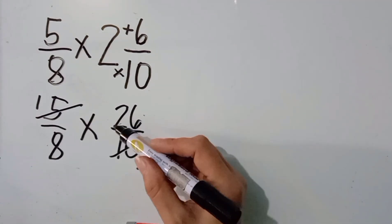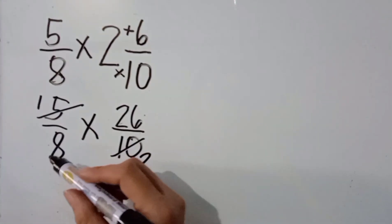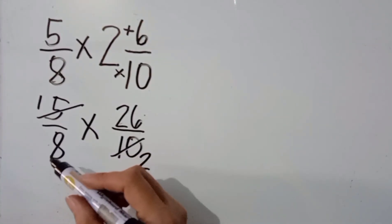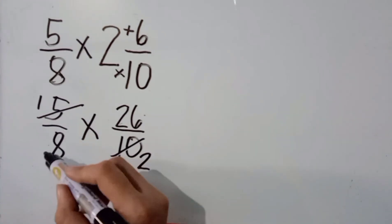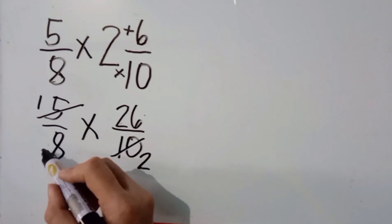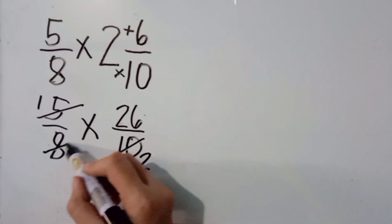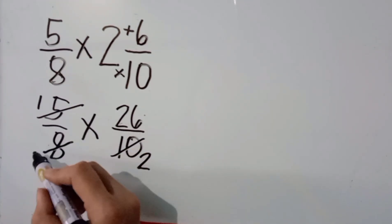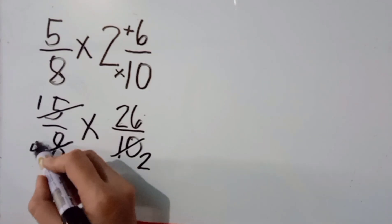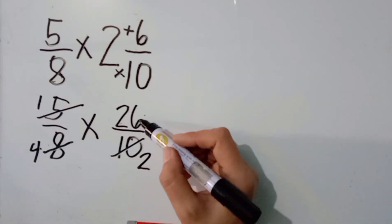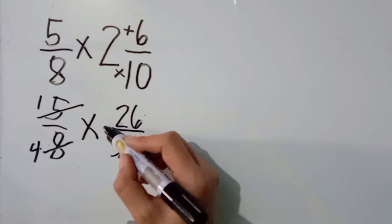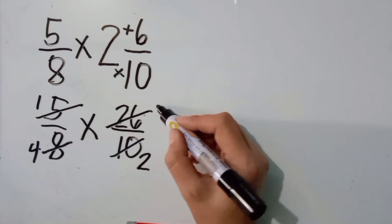How about 26 and 8? Ano po ang common factor nila? Yon po ay 2. So, let us divide. 8 divided by 2, the answer is 4. 26 divided by 2, the answer is 13.